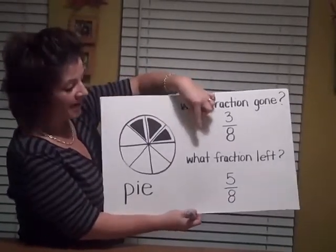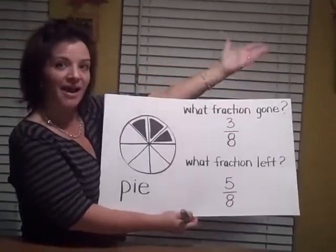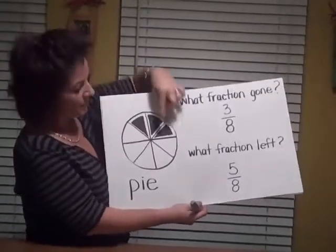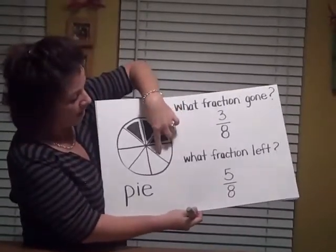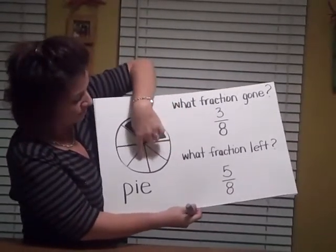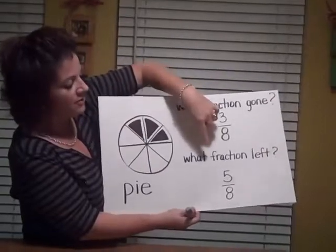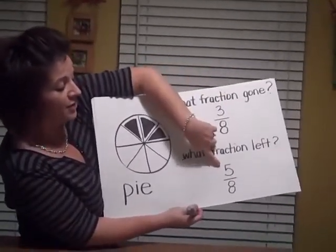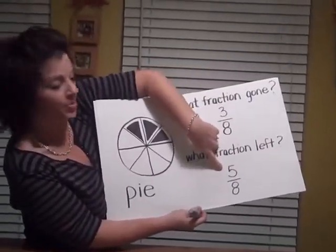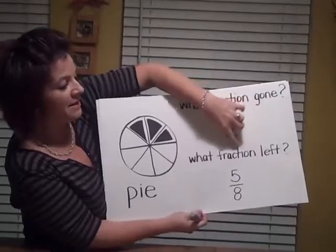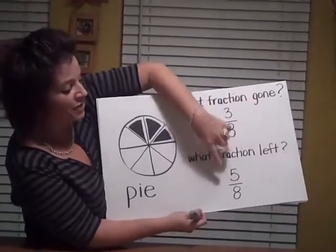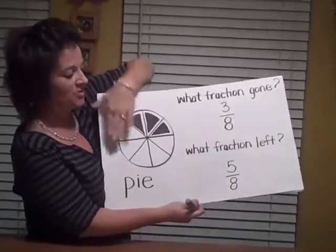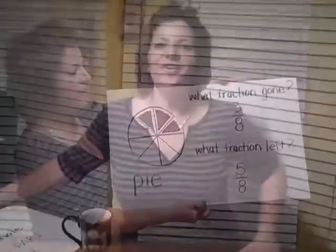Now let's look at the other way — what fraction of the pie is left? How many pieces are still there? You've got one, two, three, four, five. So your fraction is five for your numerator — the number that's left — and eight represents the whole, which is how many pieces you originally started with.